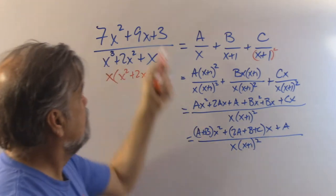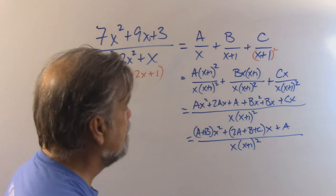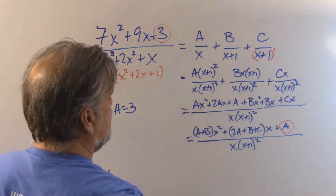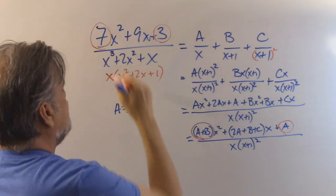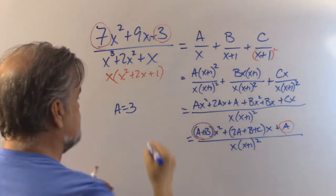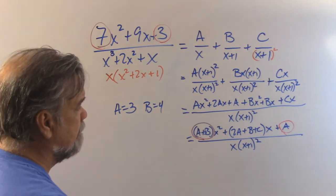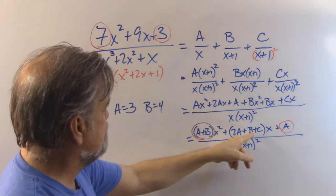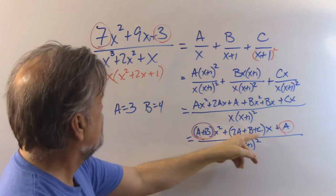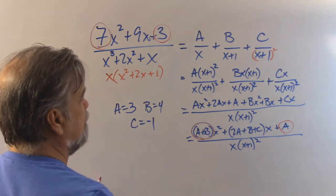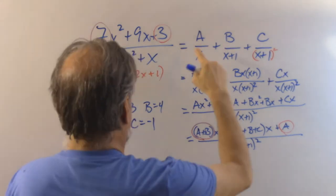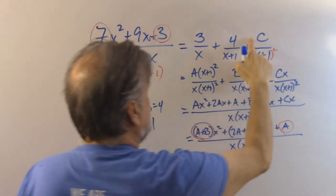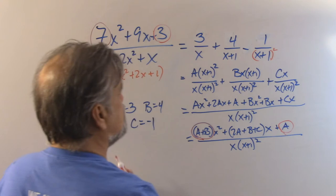Now I compare this to the original, and I can see that a has to be 3, so a equals 3. Then a plus b has to equal 7, and since a is 3, b is going to be 4. And then 2a plus b plus c has to equal 9. So 2a is 6, plus b is 4, that's 10, plus c equals 9 — that tells me c is negative 1. So my answer is 3 over x plus 4 over x plus 1 minus 1 over x plus 1 squared.